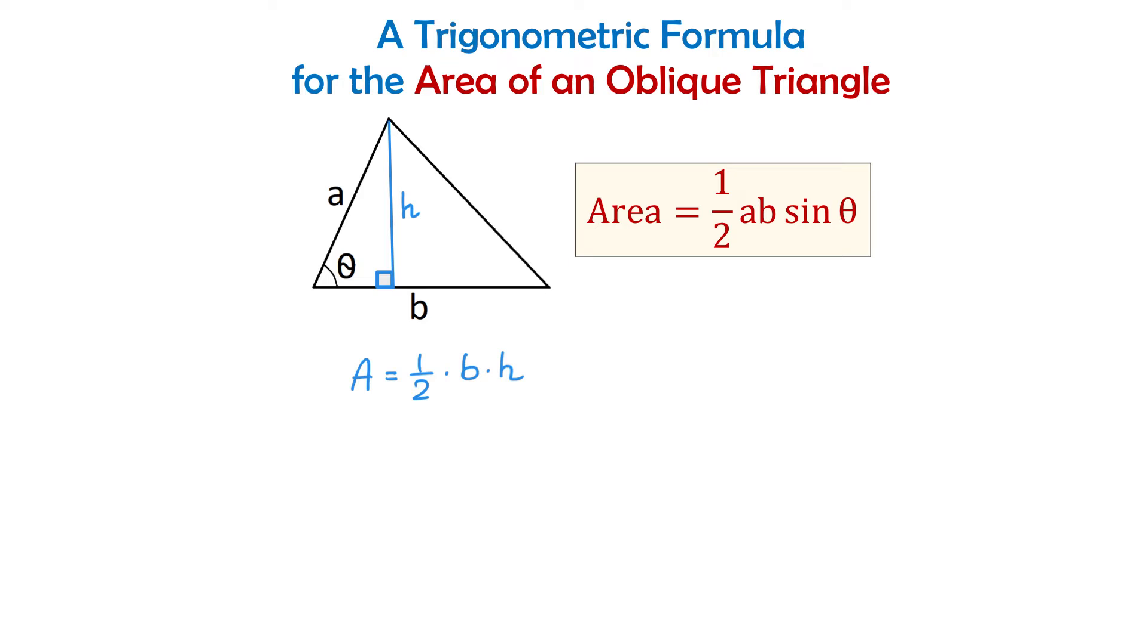Now let's take a look at this right triangle formed to the left. In this triangle we have the acute angle θ, the opposite side is h and the hypotenuse is a. Then we can use the sine function and write that sin θ equals h divided by a.